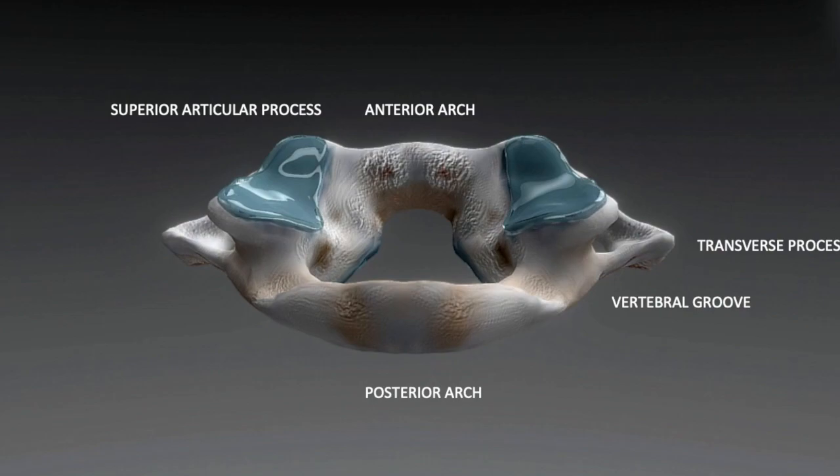Lateral to the lateral mass is a transverse process which has a vertebral foramen through which the vertebral artery will pass, curve along and posterior to the lateral mass into the vertebral groove on the posterior arch and finally enter the foramen magnum.